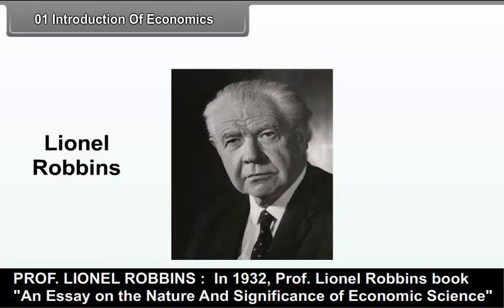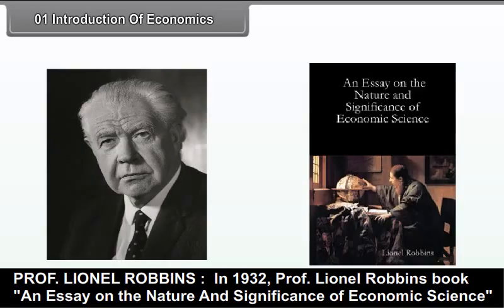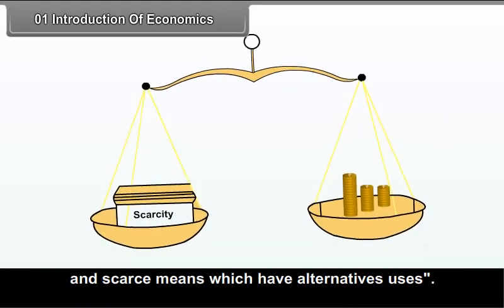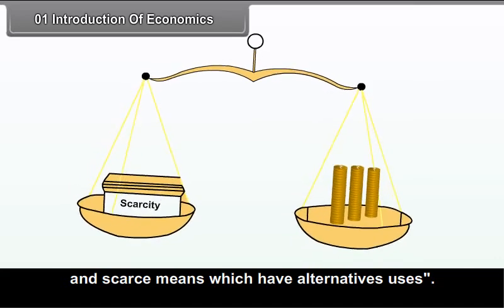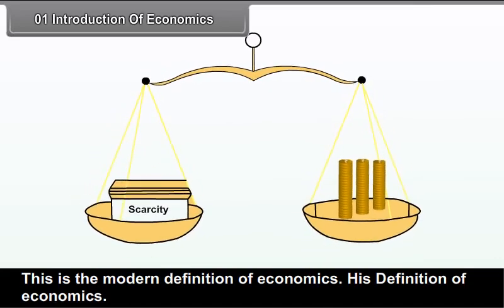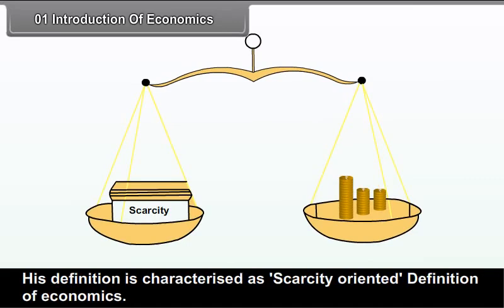Prof. Lionel Robbins, in his essay on the nature and significance of economic science, explained that economics is a science which studies human behaviour as a relationship between ends and scarce means which have alternative uses. This is the modern definition of economics, and his definition is characterized as a scarcity-oriented definition of economics.